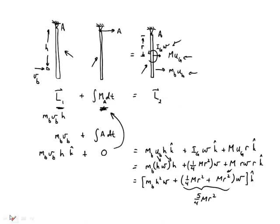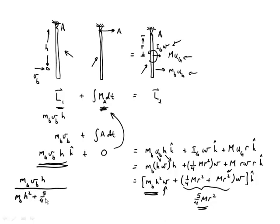Looking at omega: we know everything on the left-hand side — mass of bullet, height H, mass of plate, radius R. The only unknown is omega. So omega equals mass of bullet times velocity of bullet times H, all divided by mass of bullet times H-squared plus five-fourths times mass of plate times R-squared. It's always worth doing a unit check: mass times length squared in the denominator, mass times length over time times length in the numerator — that leaves units of 1 over time, which are the correct units for omega.